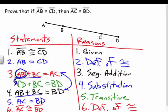So there you go. Start with your given, get it to equality using the definition of congruence, use segment addition, then substitute to get AC and BD equal to each other, and finally use the definition of congruence again. Sometimes there's going to be more than one way to do a proof. You just really have to pay attention: what can I do, and how can I put a reason behind it? The more we do, the more comfortable you're going to feel. It might be complicated early on, and that's okay.